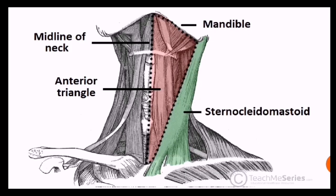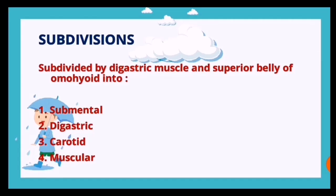Looking at this picture, this is your anterior triangle. Medially you have the midline of the neck, laterally you have the sternocleidomastoid muscle, and superiorly you have the base of the mandible - so these form a triangle.